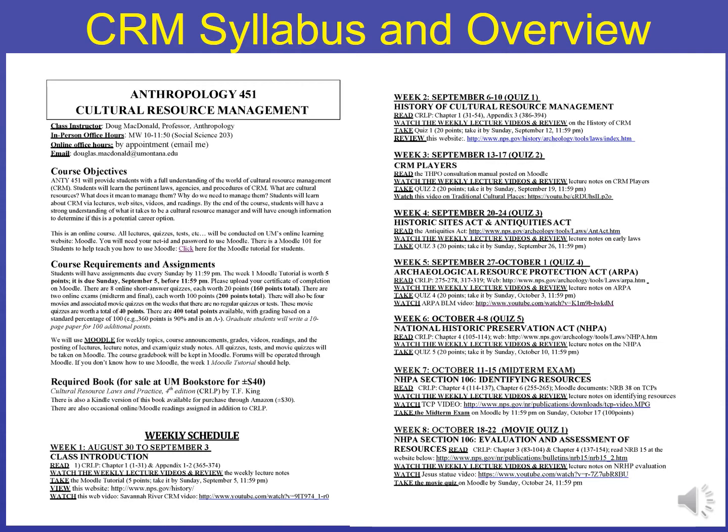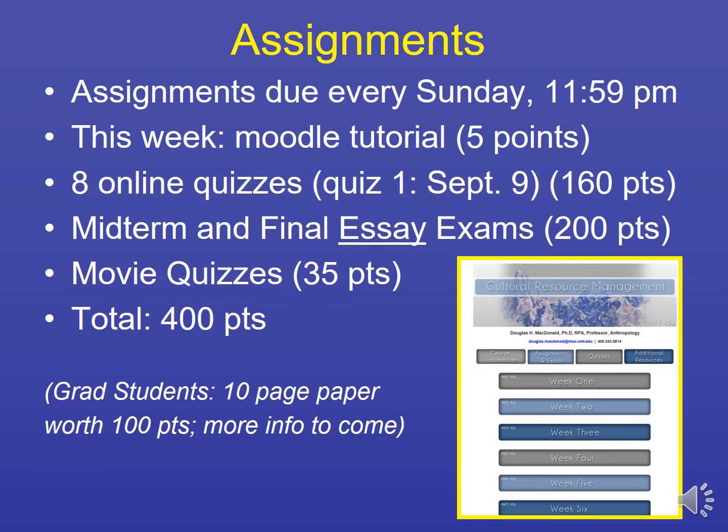Any graduate students in this class will be required to write an additional 10-page paper worth 100 points. In summary: eight online quizzes worth 160 points, a midterm and final exam worth 200 points, movie quizzes worth 35 points, and the Moodle tutorial worth five points. Graduate students have an additional 100-point paper.